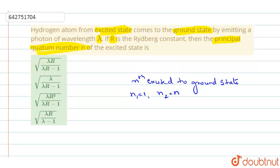And we know the relation between the lambda and the quantum number, principal quantum number N. It is given by 1 by lambda is equal to R into 1 by n1 square minus 1 by n2 square.